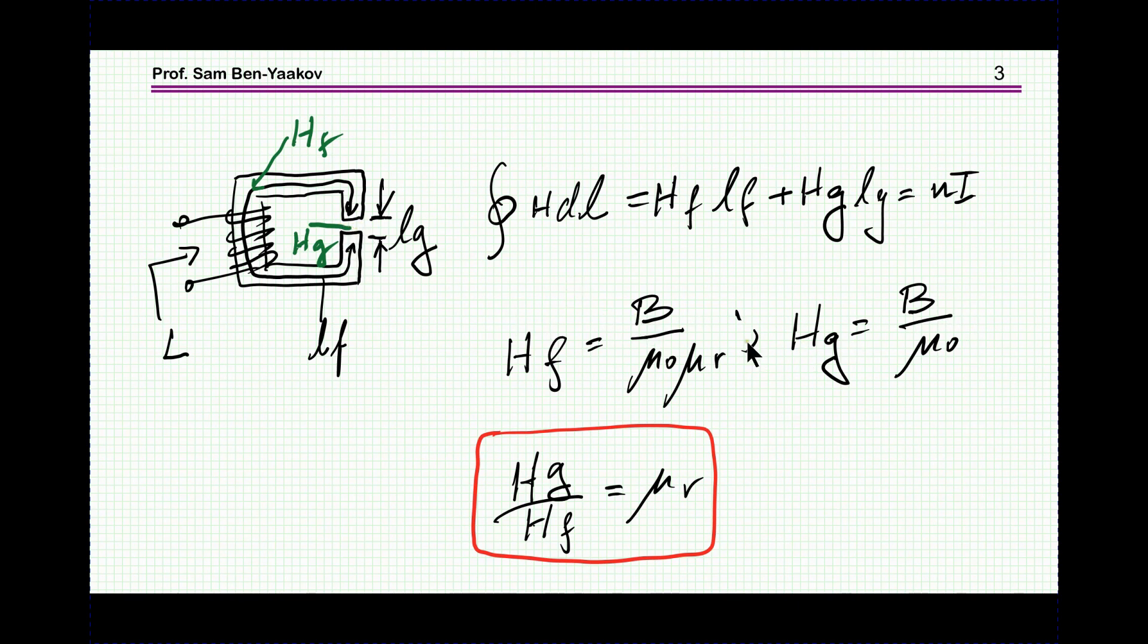Dividing one by the other you get that the magnetic field within the gap over the magnetic field in the ferrite is μR, which is a very large number, like three thousand or four thousand. This is why we're saying that the magnetic field here is very high; it's therefore a source of EMI.